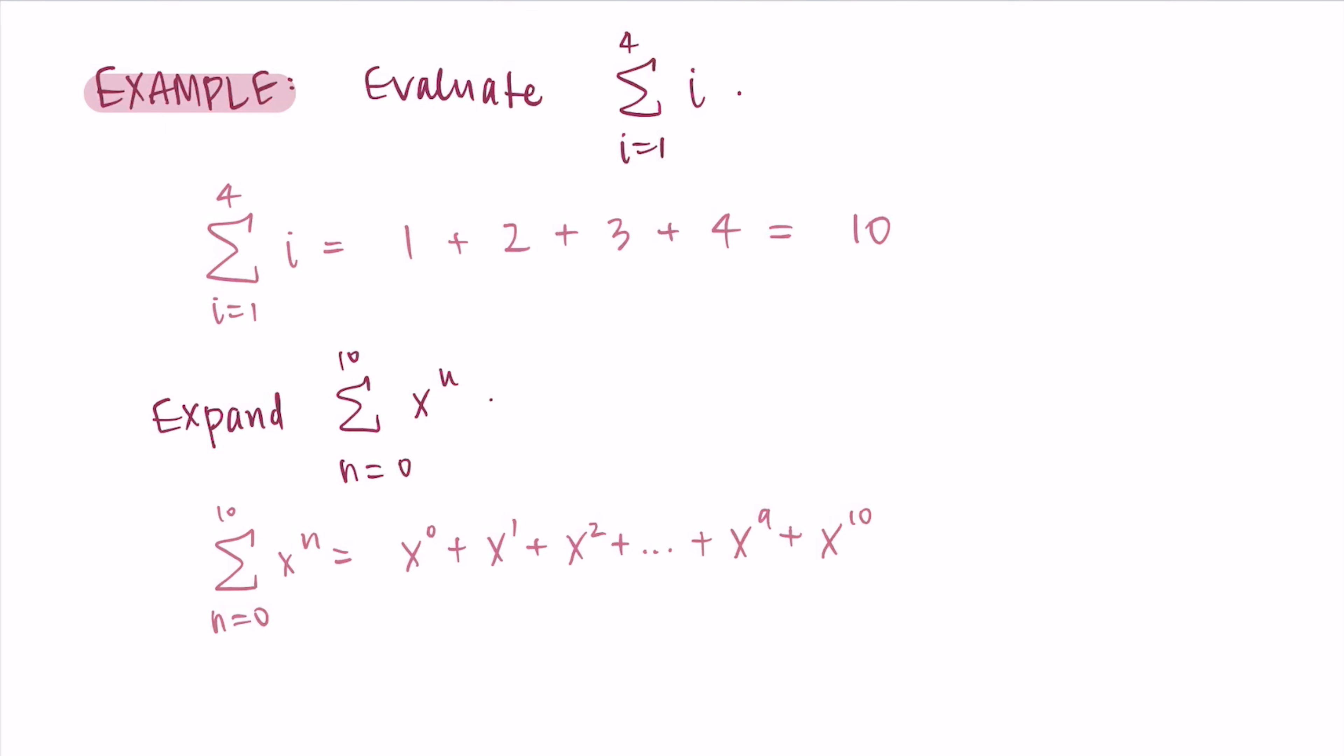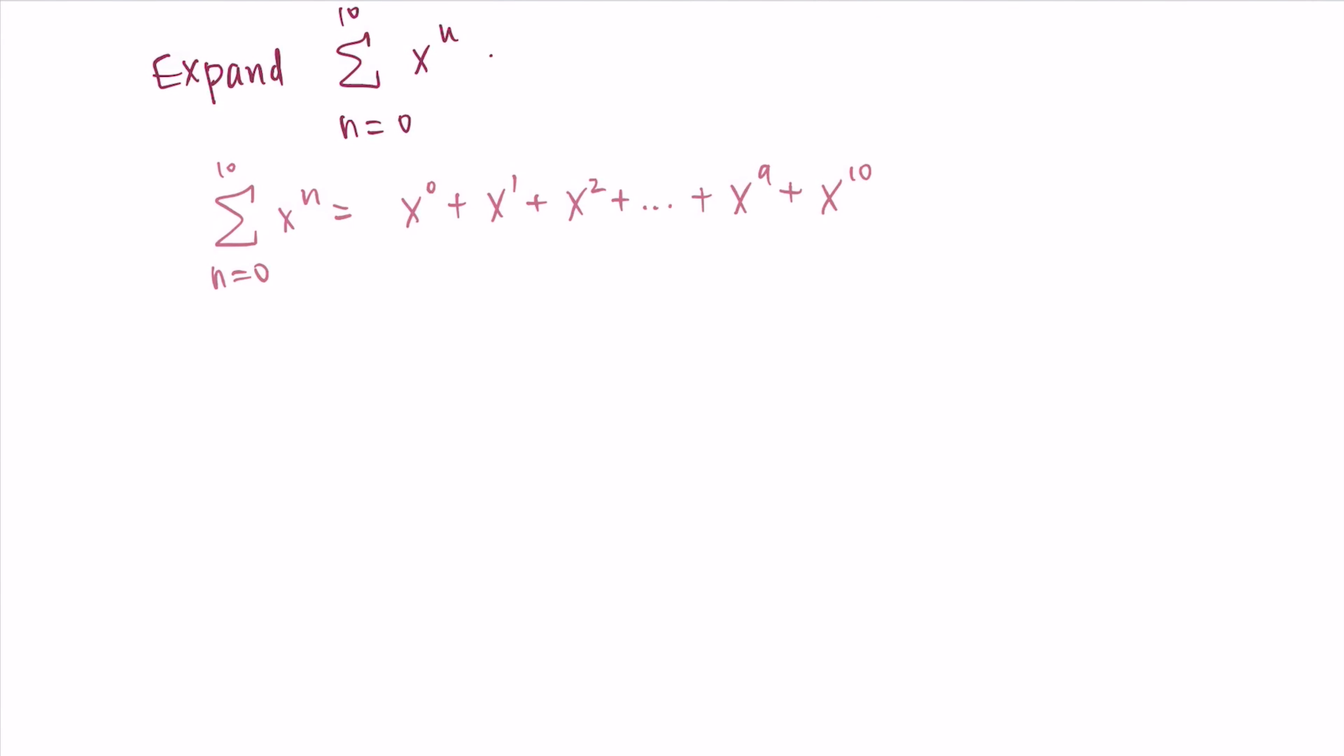So again, on both of these examples, the index, the i, or I used n in the second example, is sort of like the variable that we're replacing each time, and we count up by 1. So we start at the lower bound, and then we just count up by 1 each time, and we plug in that new number and then add it to itself. Again, remember, this is just to give you a really brief introduction into how this summation notation works and how it looks like. I don't expect you to be a pro at it or know everything about it just from watching this video.